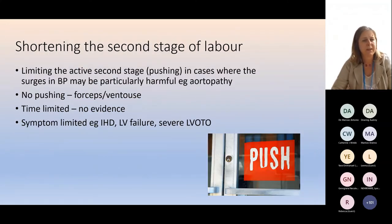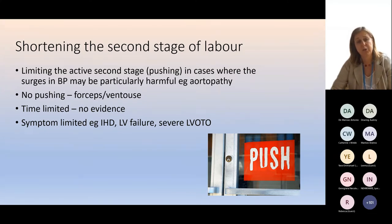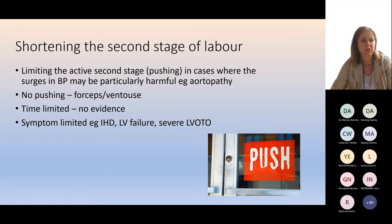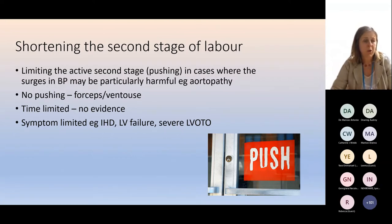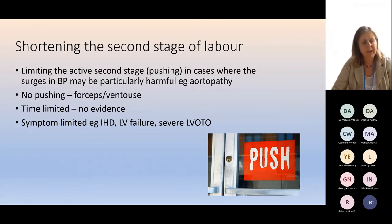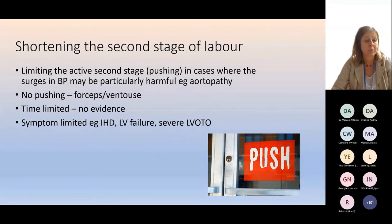On the subject of delivery planning, we need to think about the second stage of labour — the active pushing. The second stage has two parts: passive descent of the head and then the active pushing. Should we be limiting that in cases where blood pressure surges may be harmful, such as in aortopathy? You can allow passive descent of the head and then lift out with forceps or ventouse — which needs to be planned because you should have an epidural in for that. There's no evidence to support a half-hour limitation on pushing. It needs to be an individualised decision: no pushing, minimum pushing, or symptom-limited pushing, for example in left ventricular failure or aortic stenosis.